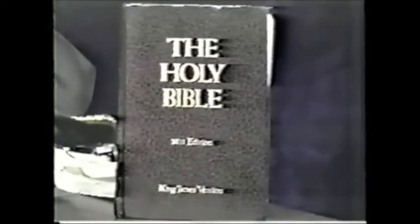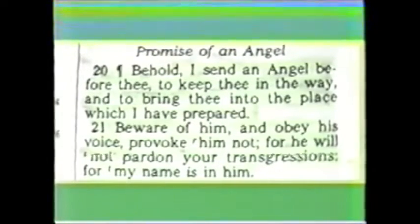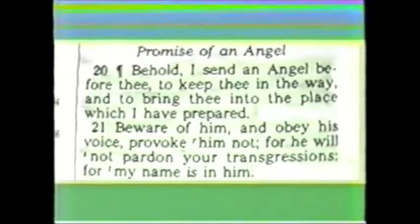The scenario is this: the Most High is talking to Moses and He's going to tell Moses about a particular angel that's going to lead the children of Israel by day and by night, and lead them into the land. Exodus 23, verses 20 and 21: 'Behold, I send an angel before thee to keep thee in the way and to bring thee into the place which I have prepared. Beware of him and obey his voice. Provoke him not, for he will not pardon your transgressions. For my name is in him.' So the Most High told Moses: beware of this angel, for my name is in him.